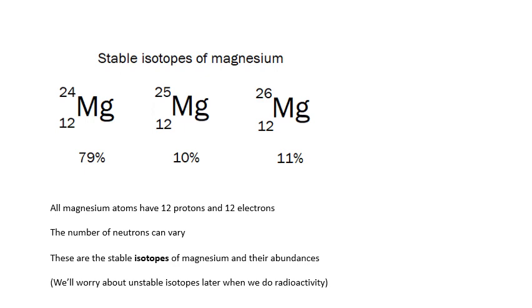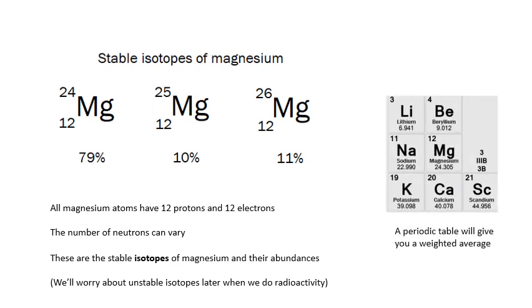When you look on a periodic table, for example here, notice that for magnesium, for the relative atomic mass, it's put 24.305, and that's basically a weighted average. Weighted as in it takes into account that there's more 24-12 than the others. Notice also that on this periodic table, they've put the mass number at the bottom. So, don't worry about it. The mass number is the big one. The atomic number is the small one.